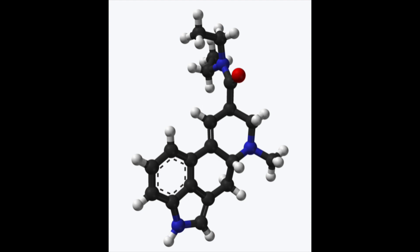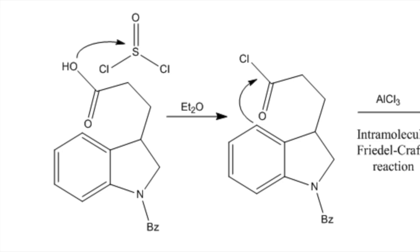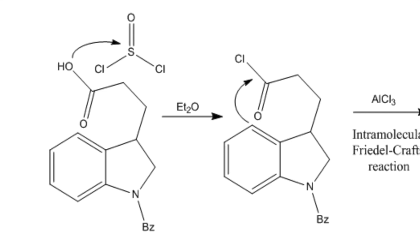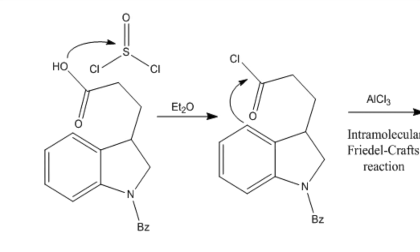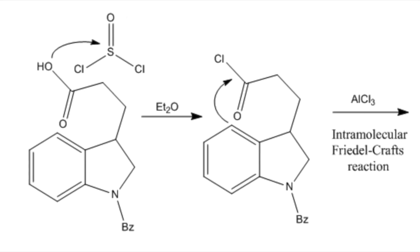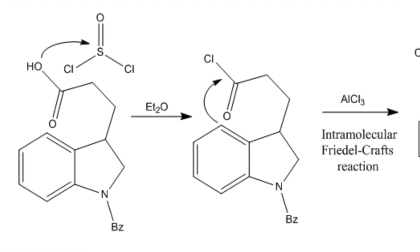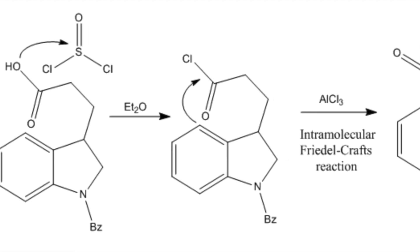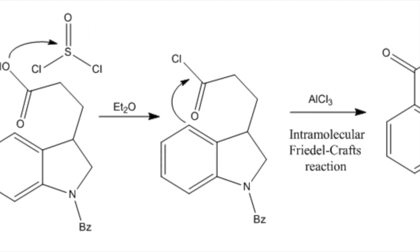Today, I will be going through the total synthesis pathway of the drug from simple chemicals and reagents. The first step of the synthesis is ring carbon formation, which occurs by treating the compound on the screen with thionyl chloride to turn the structure to acid chloride.